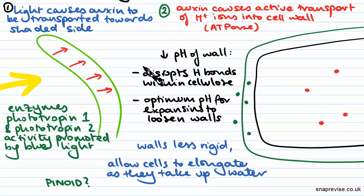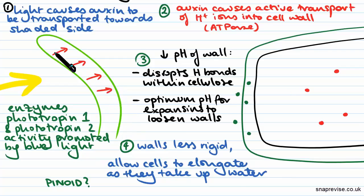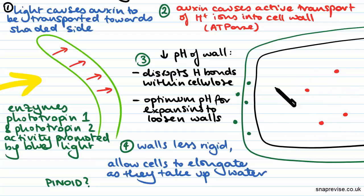This allows your cell walls to elongate as they take up water. Because water is constantly being transported up your shoot or down your roots, water can enter cells. Usually cells are just held turgid because of their cell walls,